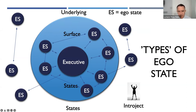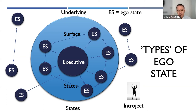And also there's this element here, which I'll explain shortly, called an introject. It is not an ego state, but it is essentially a representation of something from a person's past — a time-frozen representation. We'll go through that in a minute.